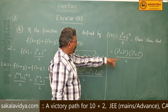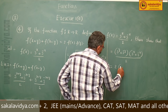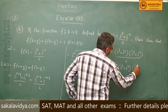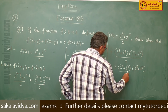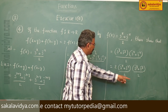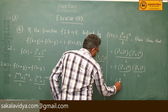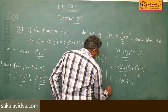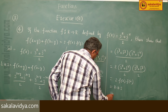Multiplying and dividing by 2: this becomes 2 · [(3^x + 3^(−x)) / 2] · [(3^y + 3^(−y)) / 2], which is nothing but 2·f(x)·f(y) = RHS. Hence, the identity is proved.